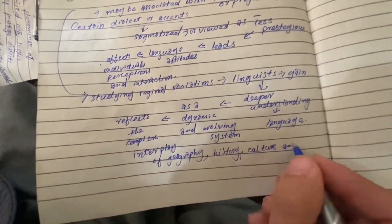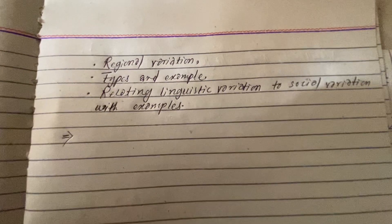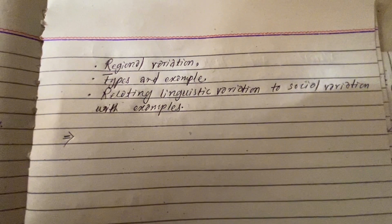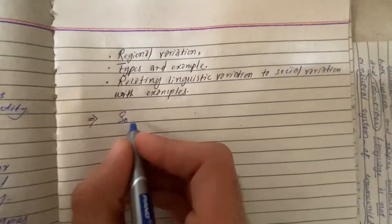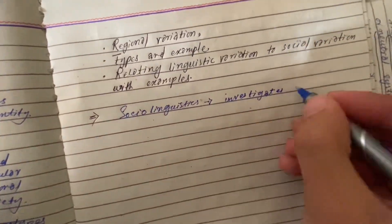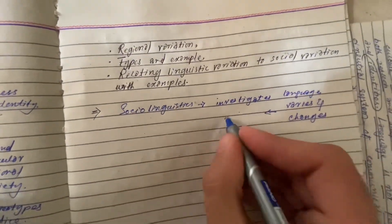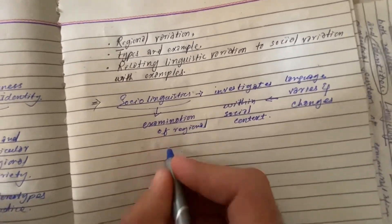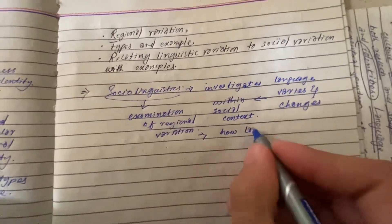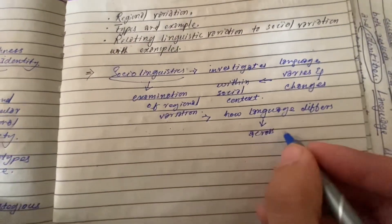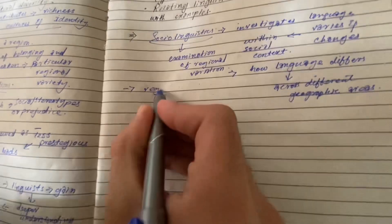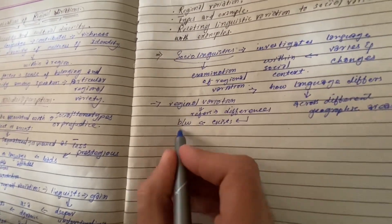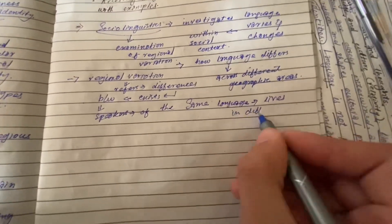Now we will discuss regional variation — its types and examples — and relate linguistic variation to social variation. Sociolinguistics is a branch of linguistics that investigates how language varies and changes within a social context. One key area of study is regional variation, which explores how language use differs across different geographic areas. In this context, regional variation refers to the linguistic differences that exist between speakers of the same language who live in different regions.